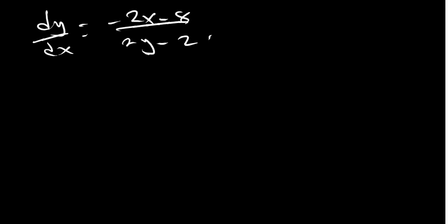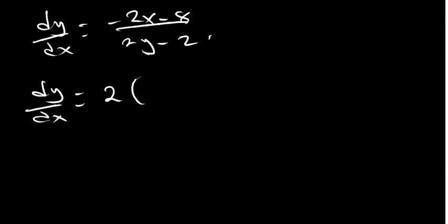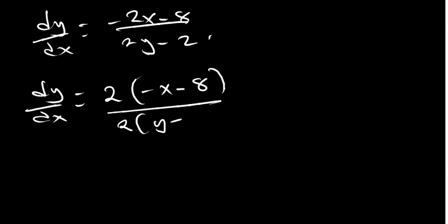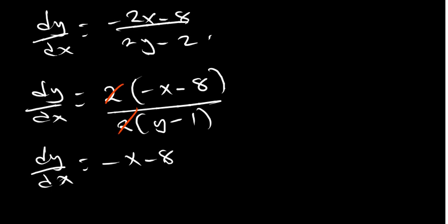If you want, you can factor further. Factor out 2 from numerator and denominator: dy/dx = 2(−x − 4) / 2(y − 1). Cancel the 2s, and the final answer becomes dy/dx = (−x − 8) / (y − 1). This is our answer.